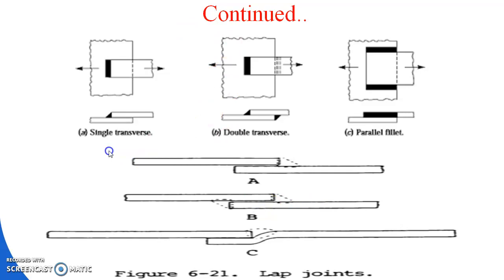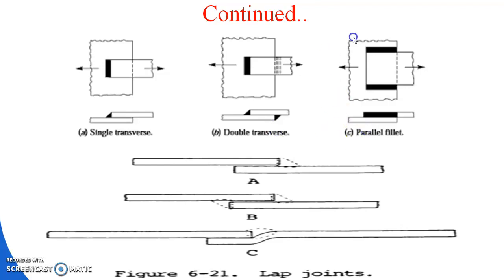Here are the diagrams of single transverse, double transverse, and parallel fillet joints — these are the diagrams of the lap joint or fillet joint. If welded in one corner, it is a single transverse joint. If welded in two corners, it is called a double transverse fillet joint. The third type looks like a parallel fillet joint.